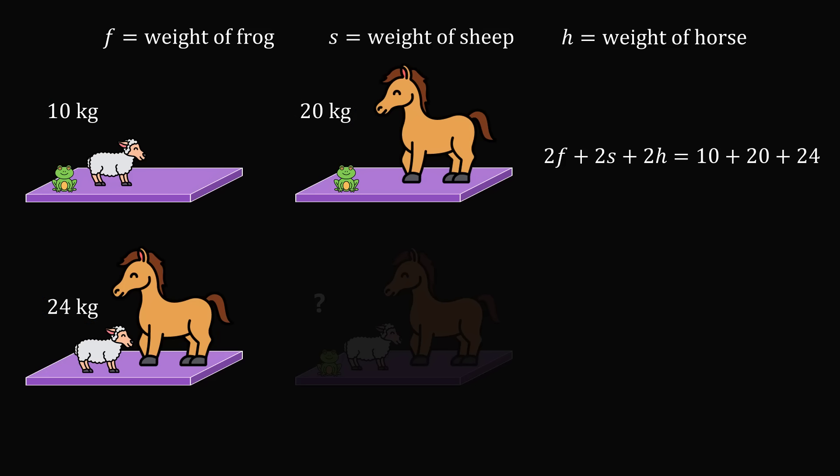So 2 times the weight of each animal will be equal to 10 plus 20 plus 24. Which means 2 times the weight of each animal will be equal to 54. And all we have to do now is divide both sides of the equation by 2.